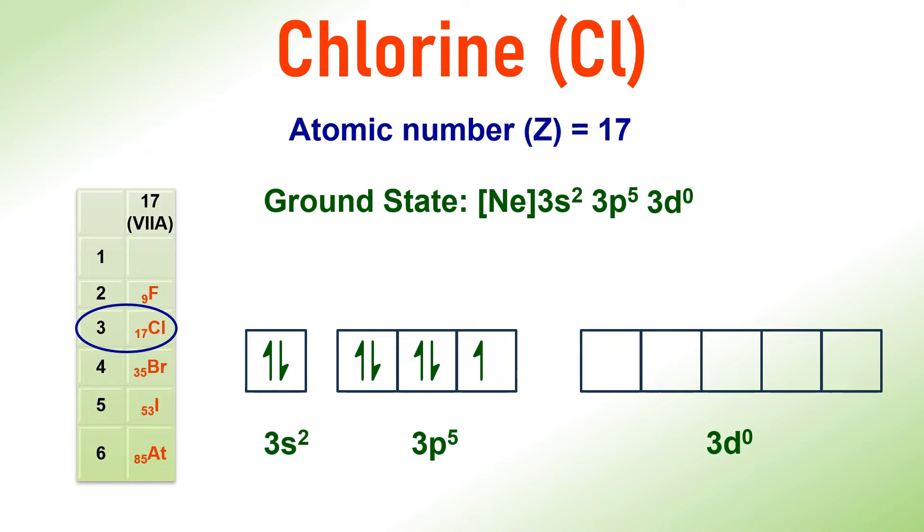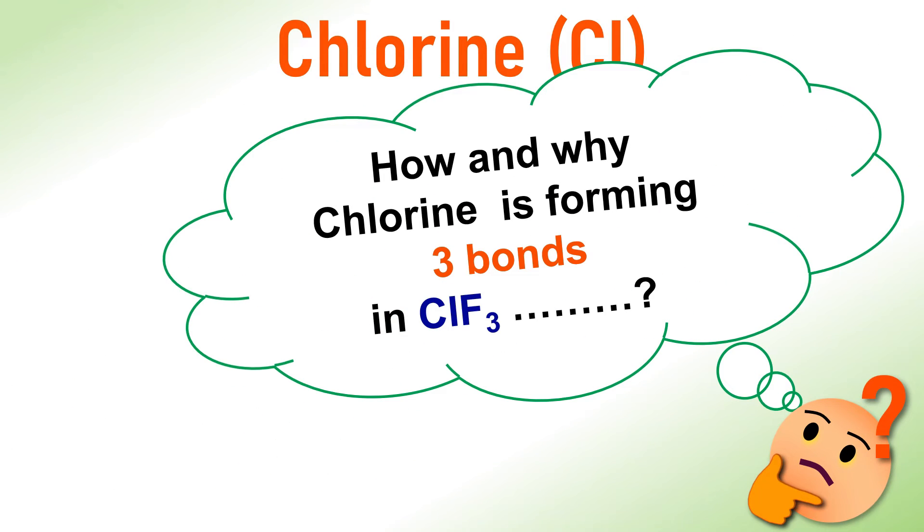And again, there is one unpaired electron in one of the 3p orbitals of Chlorine. However, Chlorine forms three bonds in ClF3, employing the presence of three unpaired electrons. This raises the question of how and why Chlorine can form three bonds in this context.